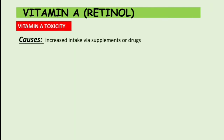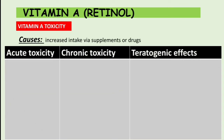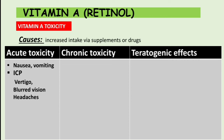Now let's talk about toxicity of Vitamin A, caused by increased intake via supplements or drugs. Toxicity is classified into three groups: acute toxicity, chronic toxicity, and teratogenic effects — the last being especially important in pregnant women or those about to conceive. Acute toxicity features include nausea, vomiting, and increased intracranial pressure, with symptoms of vertigo, blurred vision, and headaches.